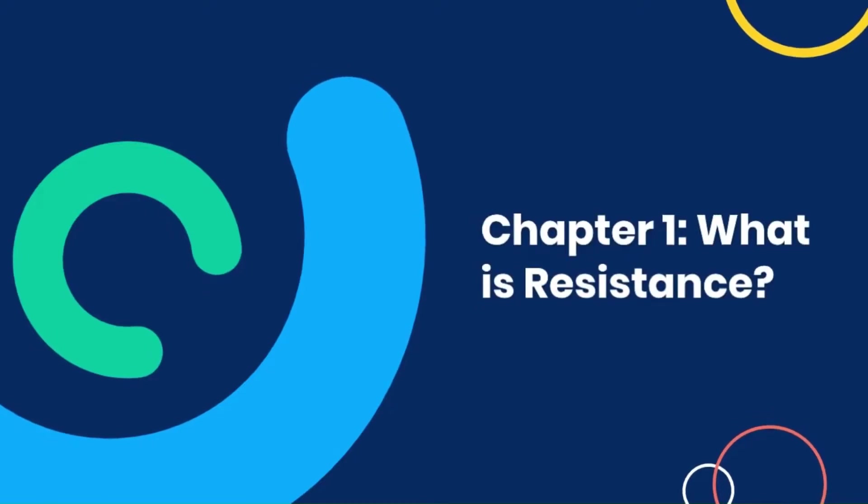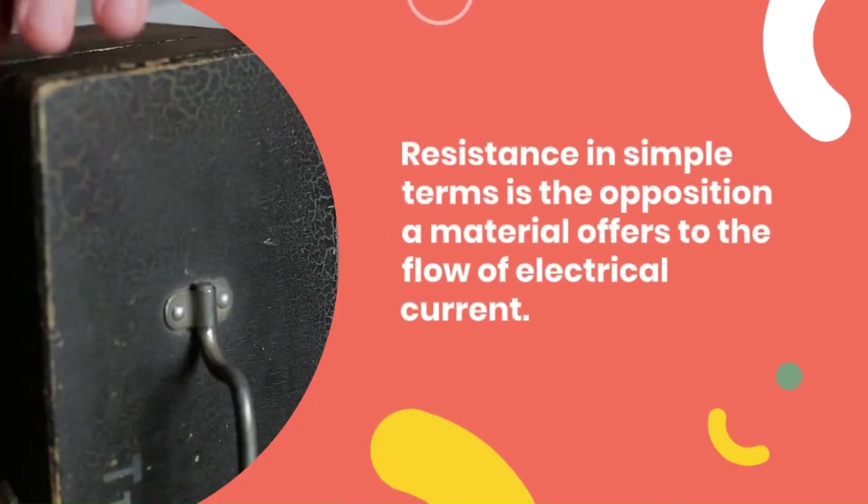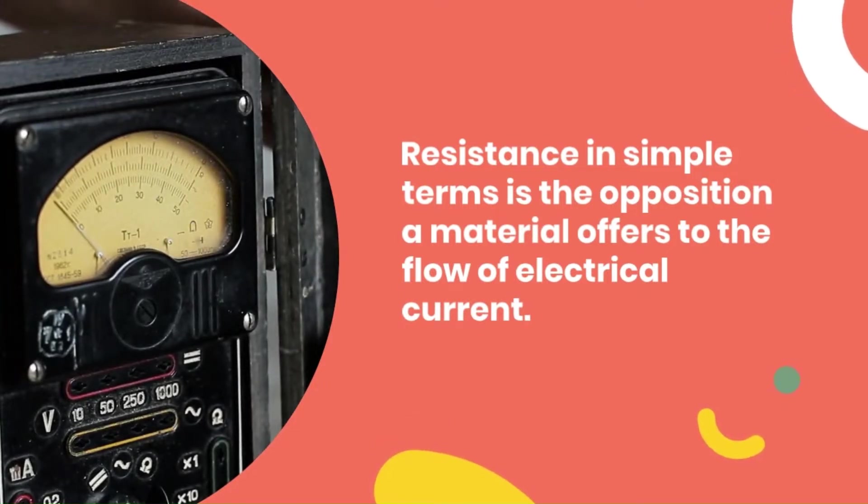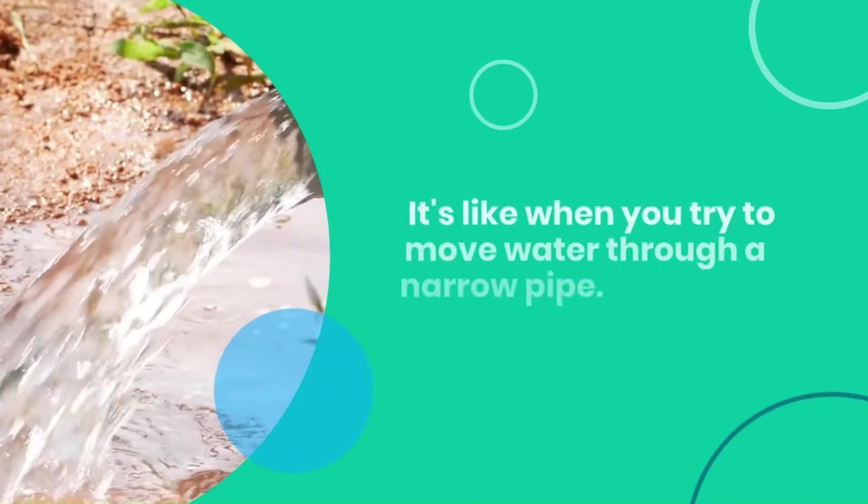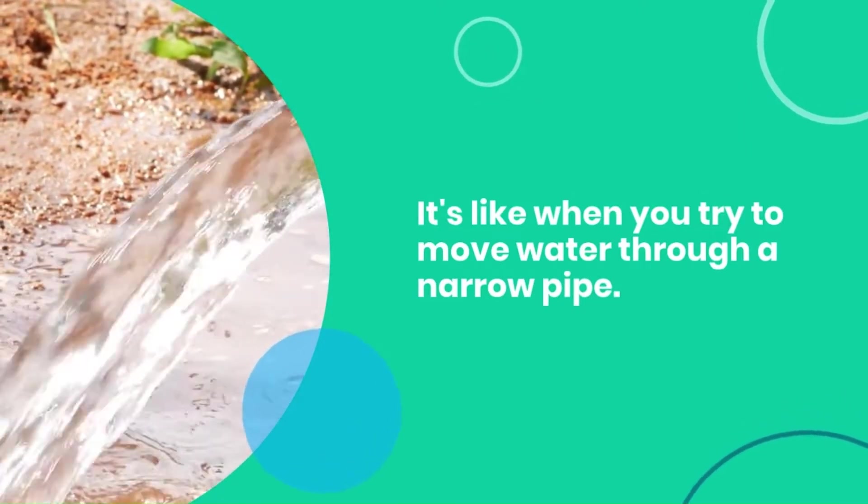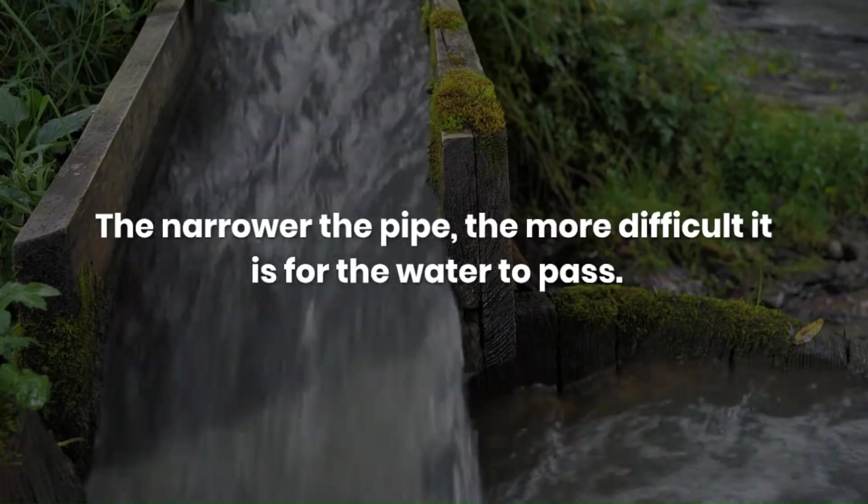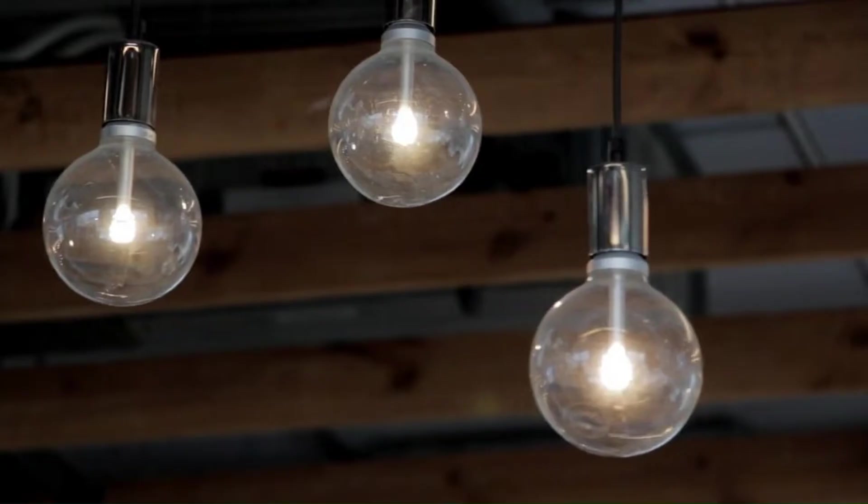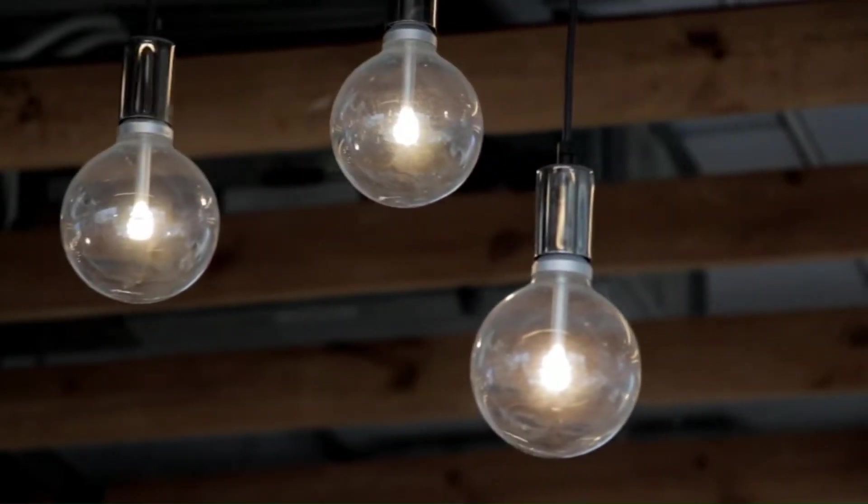Chapter 1: What is Resistance? First up, resistance in simple terms is the opposition a material offers to the flow of electrical current. It's like when you try to move water through a narrow pipe - the narrower the pipe, the more difficult it is for the water to pass. Similarly in a conductor, resistance restricts the flow of electrons.